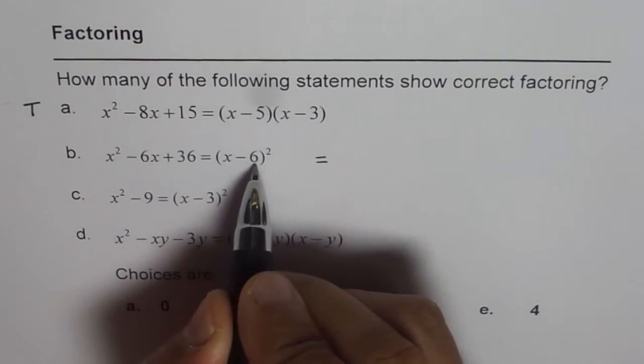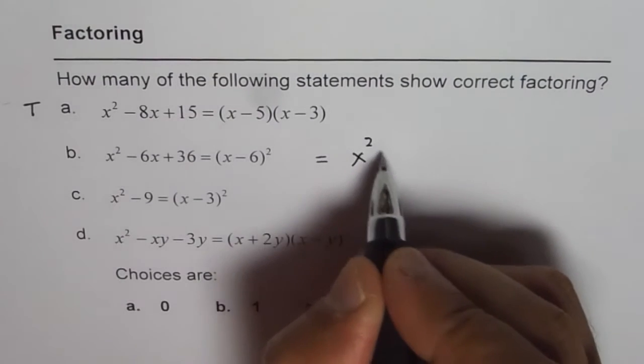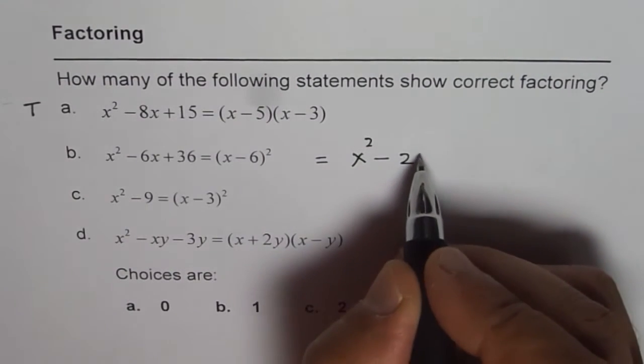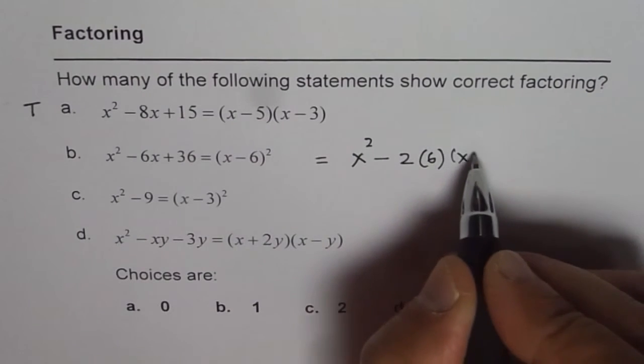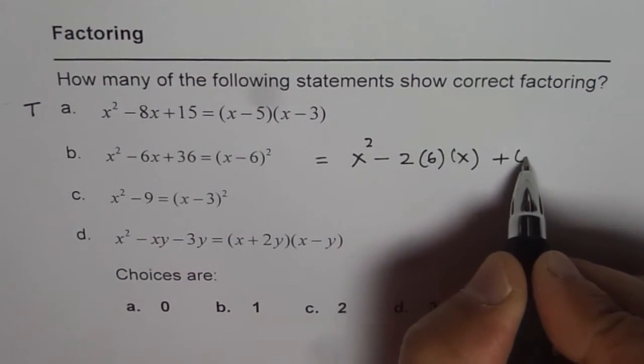If I expand (x-6)², I get x² - 2 times 6 times x plus 6².